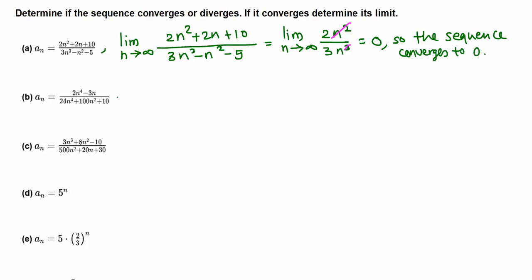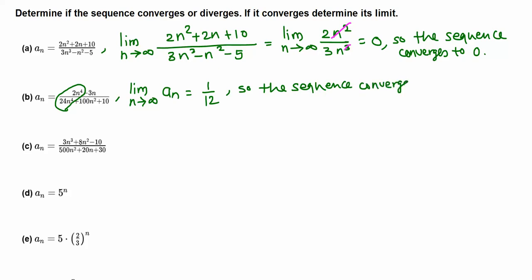In the same way, let's find the limit of a_n when n goes to infinity. We just write down the leading terms: 2n⁴ over 24n⁴. The n⁴ terms cancel, leaving 2 over 24, which is 1/12. So the sequence converges to 1/12.